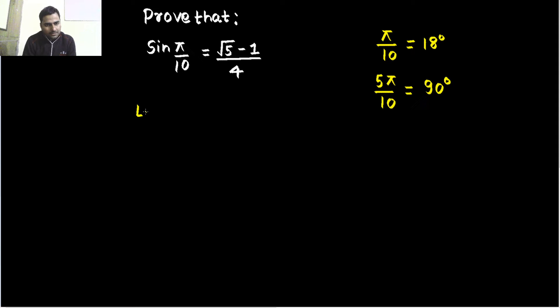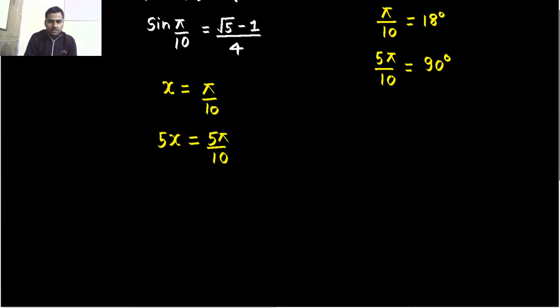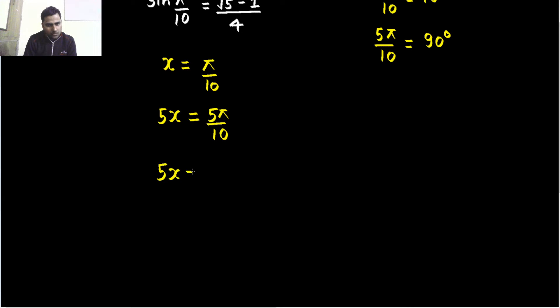So, we will start off with, let x equals to pi by 10, this is in radians. Now, according to my idea, if I find 5 times x, that is 5 pi by 10, you cancel this out, you are getting 5 times of x equals to pi by 2.